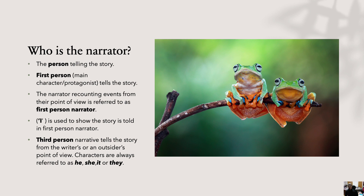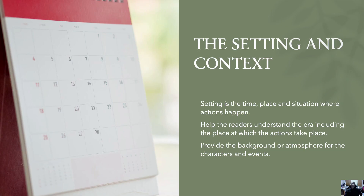Third person narrative tells the story from the writer's or an outsider's point of view, and characters here are always referred to as he, she, it, or they. Next is the setting and context. Setting is a time, place, and situation where actions happen. They help the readers understand the era, including the place at which the actions take place, and provide background atmosphere for the characters and events.